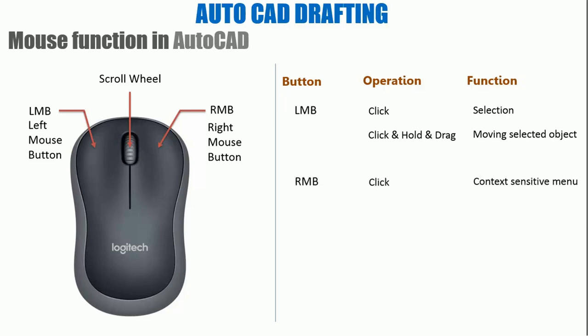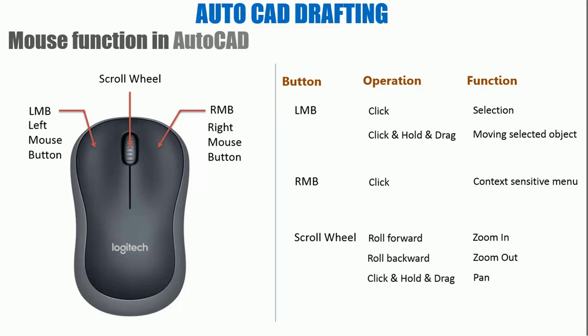For the RMB — right mouse button — you can only click. If you click it, it will pop up a context-sensitive menu. Coming to the scroll wheel: rolling forward performs zoom in, and rolling backward performs zoom out. The scroll wheel is itself a button — click, hold, and drag to pan. You can also double-click the scroll wheel to zoom extents.